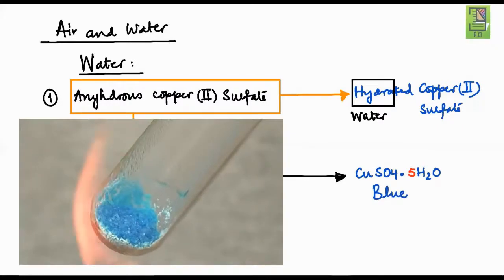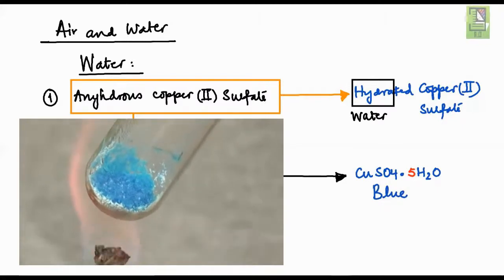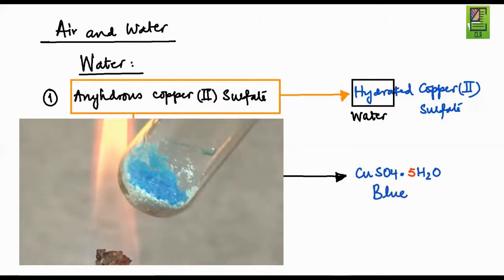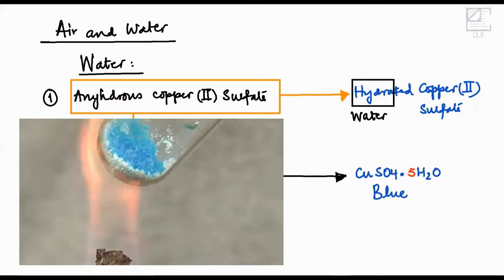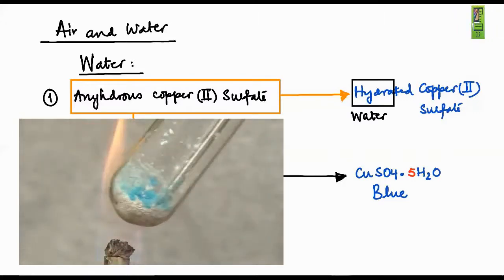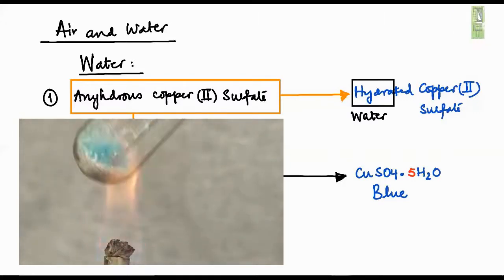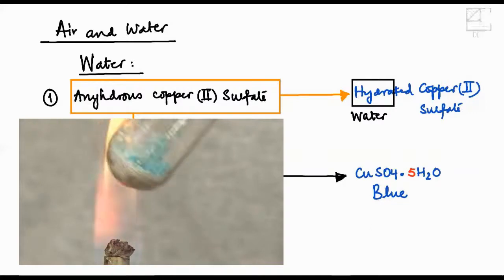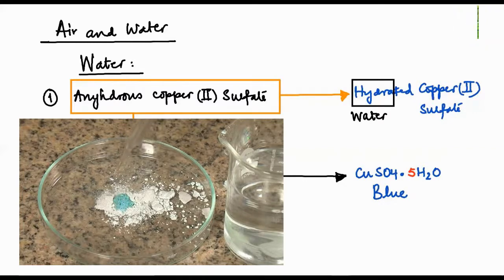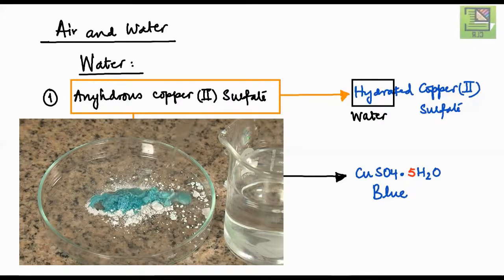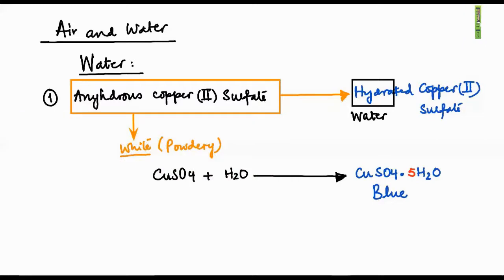This can be seen in the video: hydrated copper(II) sulfate crystals, which are blue, are heated and change color from blue to white as the water held between the crystals comes out. This is confirmed by condensation on the walls of the test tube. When the white anhydrous crystals come in contact with water again, they transform back into the crystalline blue hydrated form, demonstrating how this property detects the presence of water.